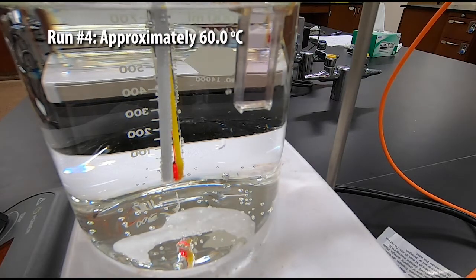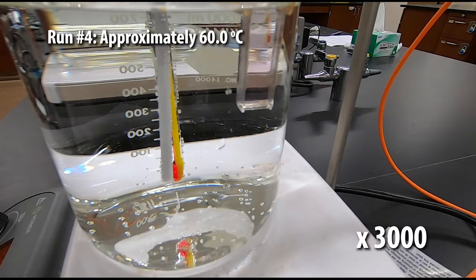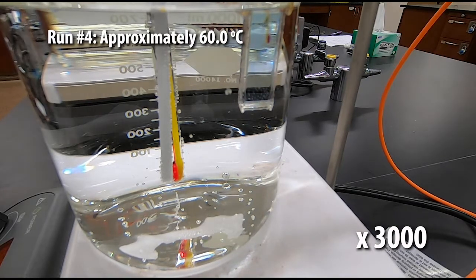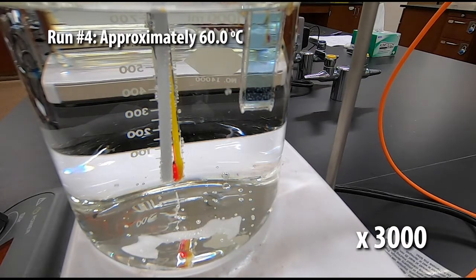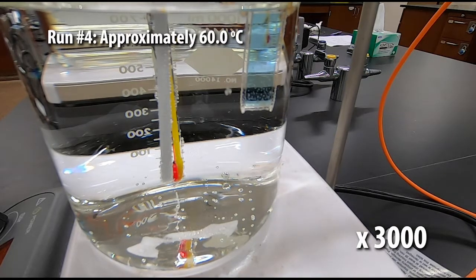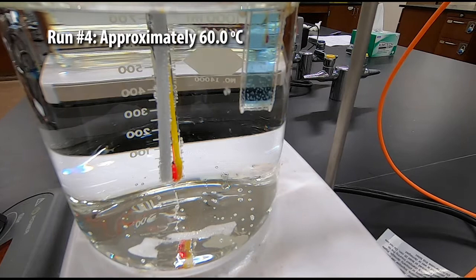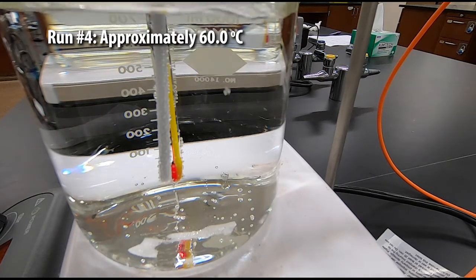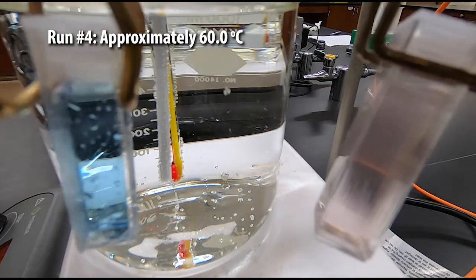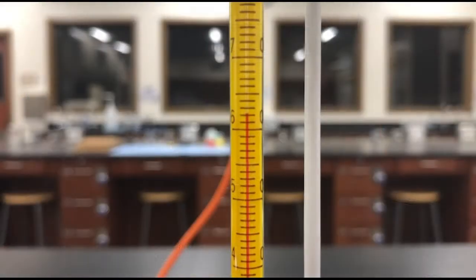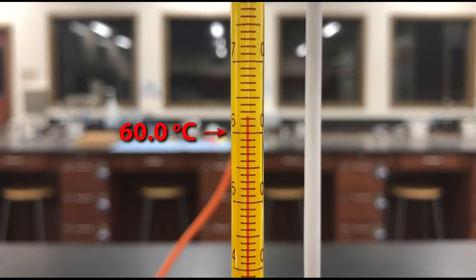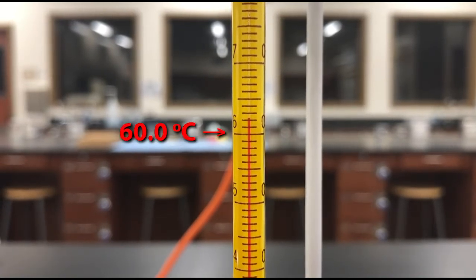Here's our third water bath which has an approximate temperature of 60 degrees Celsius. You can see as the temperature increases there's more of a dramatic shift in color. Go ahead and write down what the actual temperature is from this thermometer. The long line is 60 degrees.